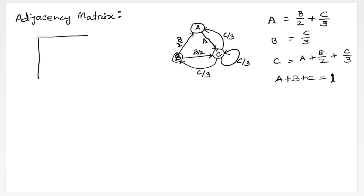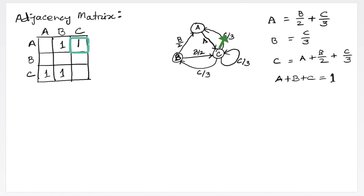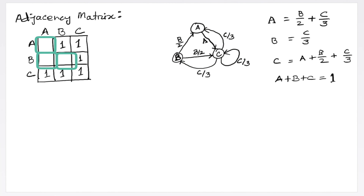Let me construct the adjacency matrix for this network. The columns represent source nodes and the rows represent the destination nodes of hyperlinks. There is one outgoing link from A to C, so in column A, row C, I put a 1. B has two outgoing links toward A and C. C has three outgoing links toward A, B, and itself. The network has six hyperlinks total, so the sum of the adjacency matrix is 6; blank cells contain zeros.